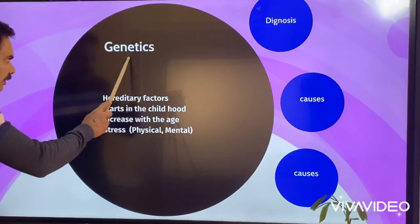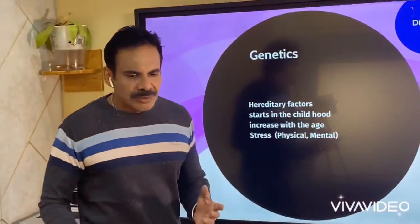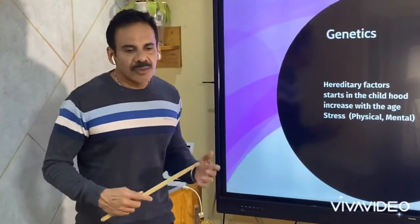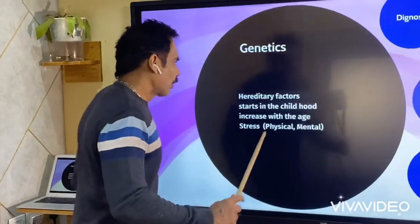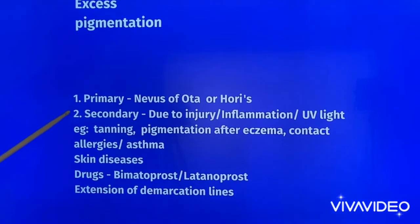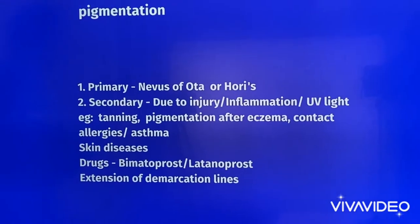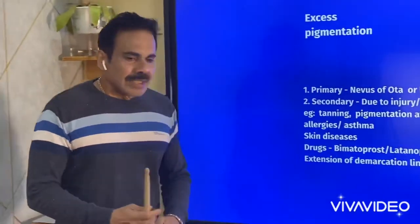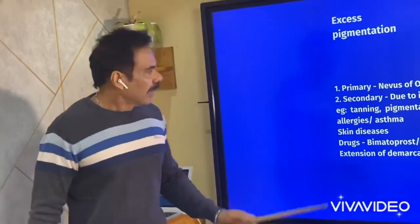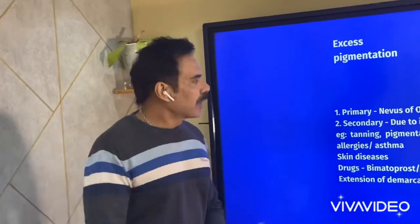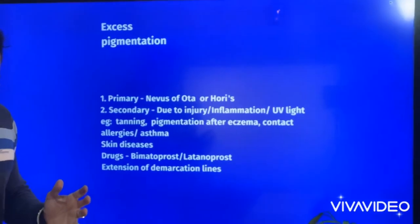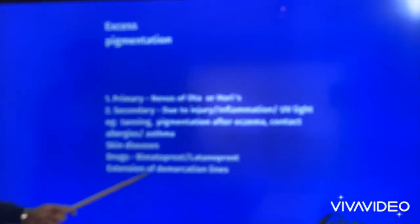Now let's check the causes in detail. The genetic cause runs in the family - the patient gets pigmentation in early childhood which gradually increases with age and worsens with physical and mental stress. Excess pigmentation can be primary or secondary. Primary means when you have a nevus - like nevus of Ota - that can extend up to under the eye, giving the appearance of dark circles. Secondary is due to injury, inflammation, or UV light exposure such as tanning.